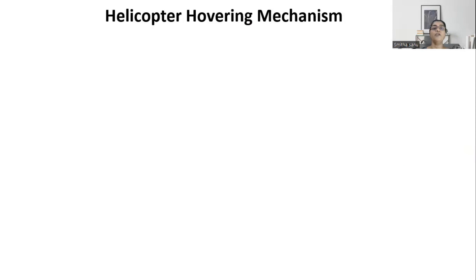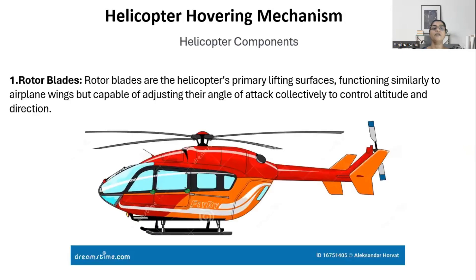To understand the mechanism of hovering of a helicopter, we need to have some basic knowledge of the parts of a helicopter. The first important part is the primary rotor blade, which functions like airplane wings and helps you adjust the angle of attack. More angle of attack helps take the helicopter to a higher altitude; lesser angle of attack helps it descend. So you can change the angle of the rotor blades and hence control ascent and descent, as well as the direction of the helicopter.